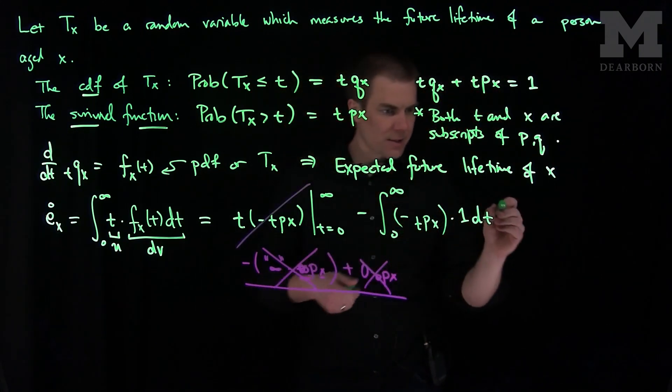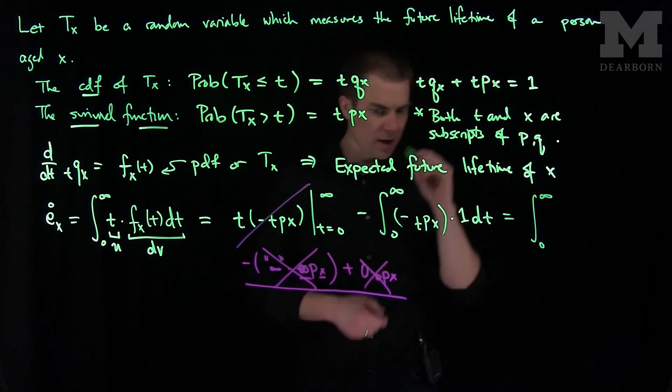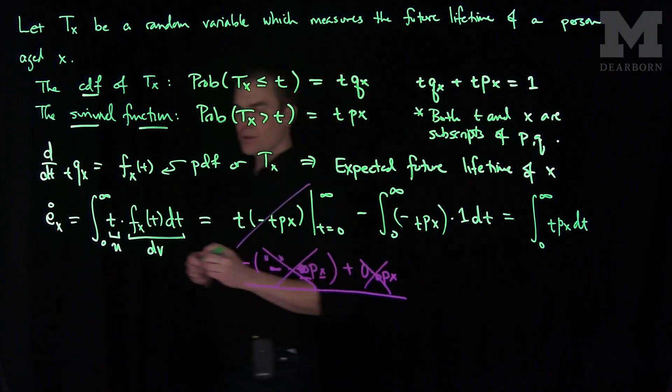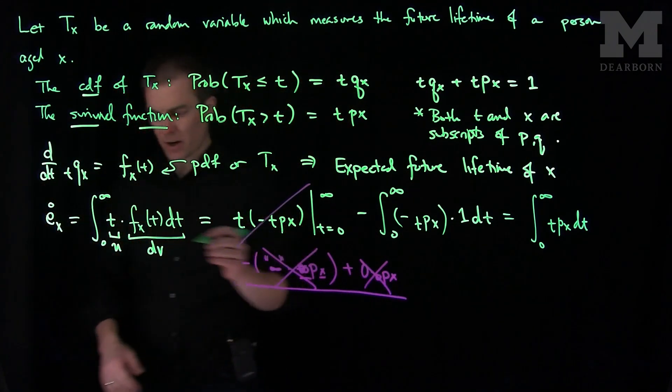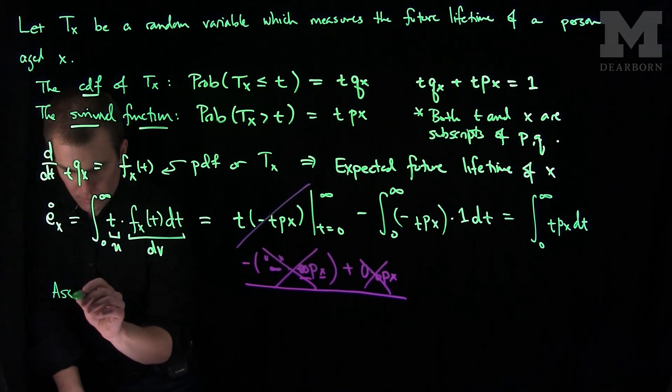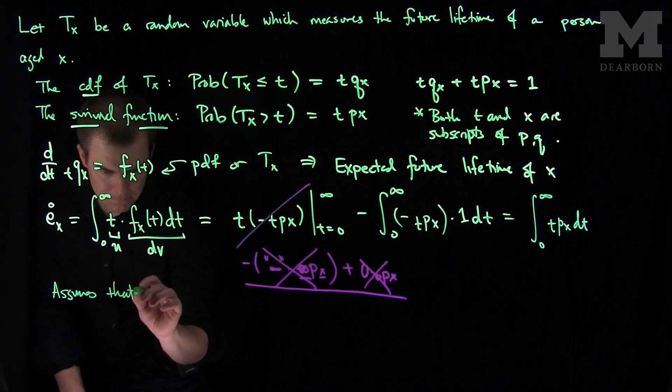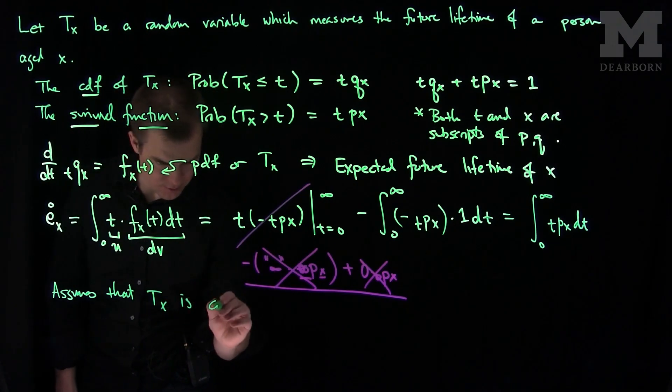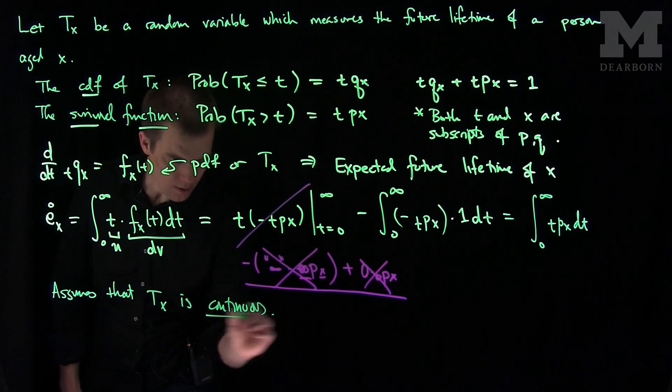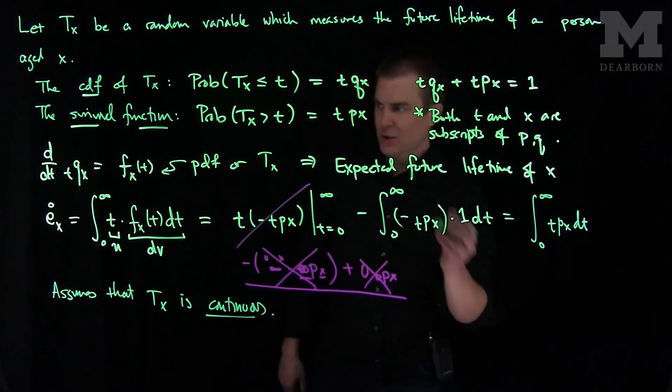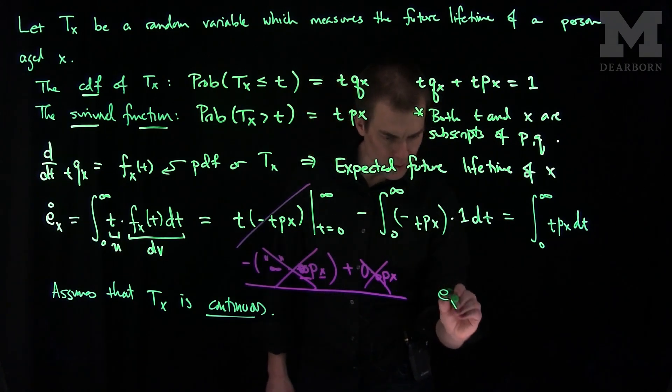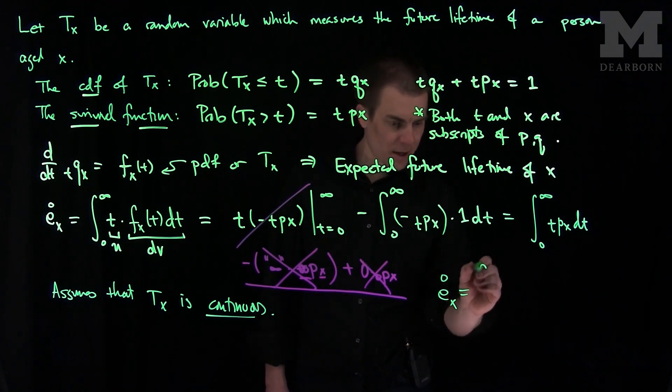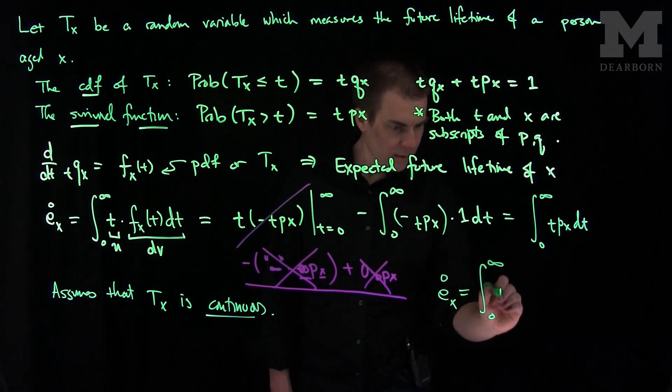Now we can simplify this. This is exactly equal to the integral from 0 to infinity of tpx dt. This assumes that the random variable is continuous. We've shown that the expected future lifetime of a person age x for a continuous lifetime is the integral from 0 to infinity of the survival function.